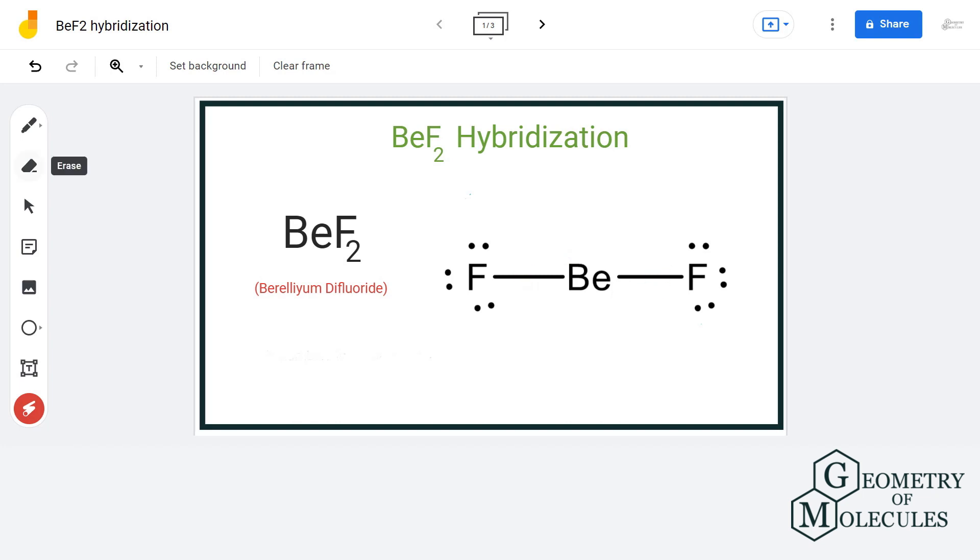This is known as steric number. In other words, steric number equals the summation of sigma bonds and lone pairs attached to the central atom.